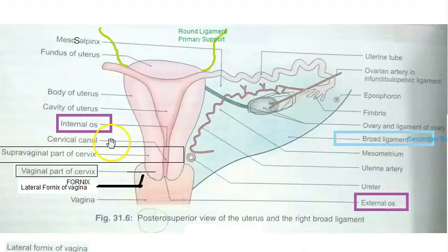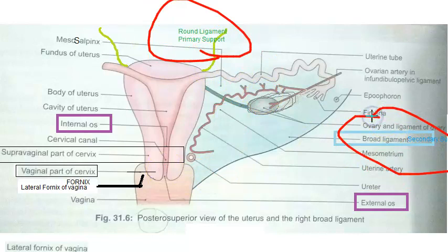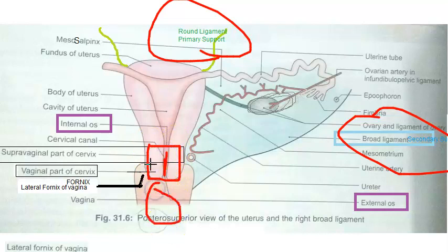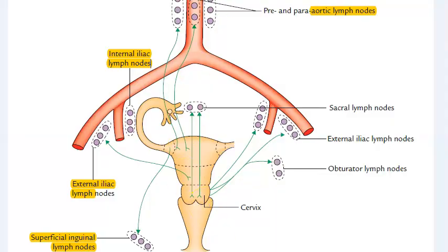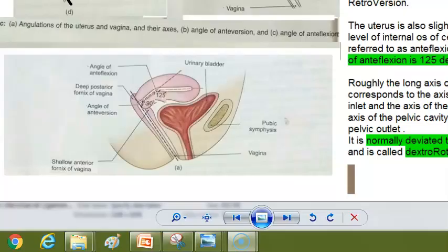For supports of the uterus, the round ligament is the primary support and the broad ligament is only the secondary support. The levator ani is also a very important support. For lymphatic drainage of the uterus, you have the external iliac lymph nodes, sacral lymph nodes, internal iliac lymph nodes, pre- and para-aortic lymph nodes, and superficial inguinal lymph nodes.